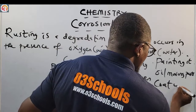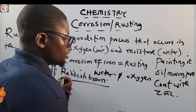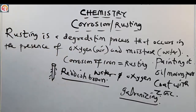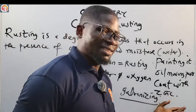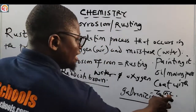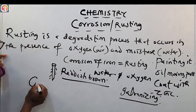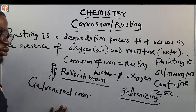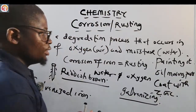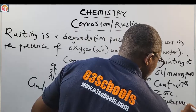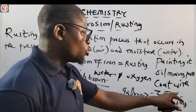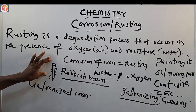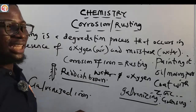We can also coat iron with zinc — this is called galvanizing or galvanization. When iron is coated with zinc, we call it galvanized iron. Many water tanks in homes use galvanized material because it improves strength and prevents the iron from getting rusty.